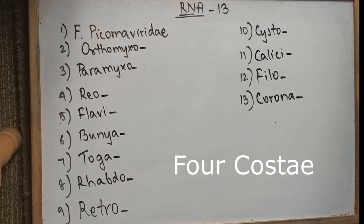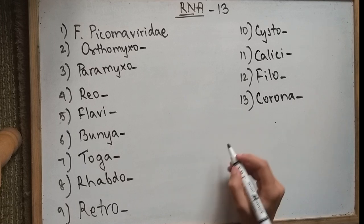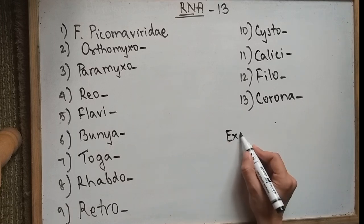That would be: Picorna, Orthomyxo, Paramyxo, Reo, Flavi, Bunya, Toga, Rhabdo, Retro, Cysto, Calici, Filo, and Corona.